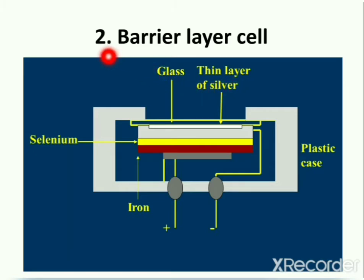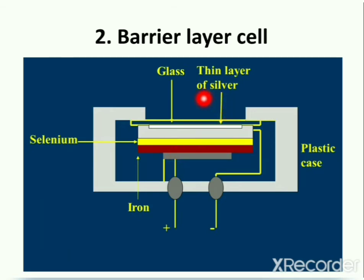When radiation coming from the sample falls upon this thin layer of silver or gold, it generates electrons. The electrons are attracted towards the iron surface because it is maintained at positive potential, but the selenium semiconductor stops the transport of electrons towards the iron surface. This causes accumulation of electrons on the thin layer of silver, producing a voltage difference between the silver surface and the base of the cell. A photocurrent flows which is directly proportional to the intensity of the incident radiation beam. Barrier layer cells are also very sensitive in nature.